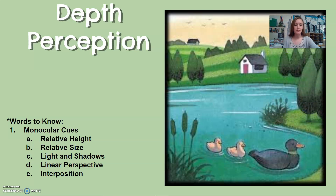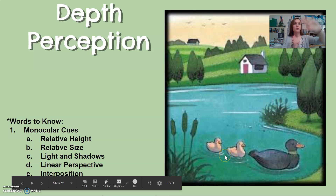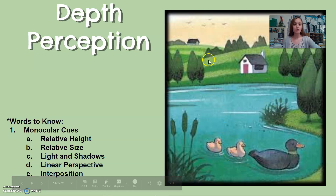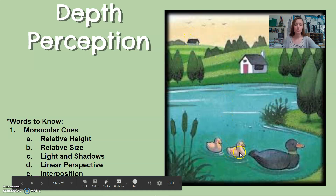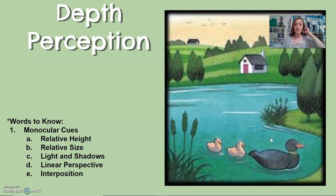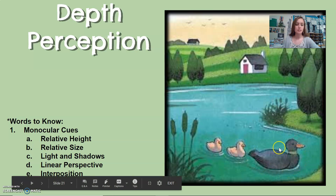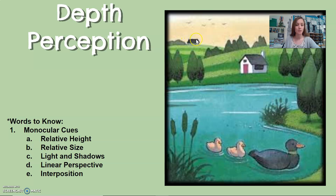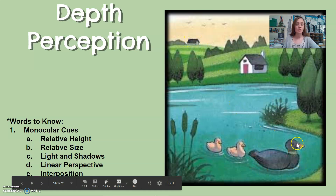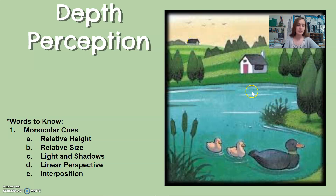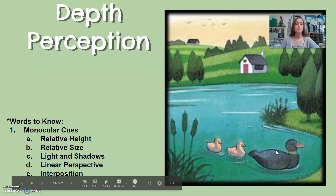One monocular cue is relative height: something higher up in your visual field is farther away, and something lower down is closer to you. Relative size also helps us understand depth — if something is larger, it is closer to you; if something is smaller, it is farther away. Notice this duck: we know what size ducks are, but this duck in my visual field is much larger than the house in the distance, telling me the duck is closer and the house is farther away.